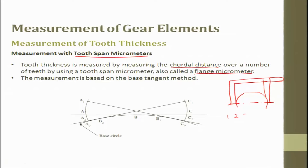Suppose we measure teeth 1, 2, 3, 4 — next time we do 2, 3, 4, 5 — then 3, 4, 5, and so on. We keep increasing and measuring 3 or 4 teeth at a time. This is the chordal distance over a number of teeth measured by the tooth span micrometer, otherwise called a flank micrometer.